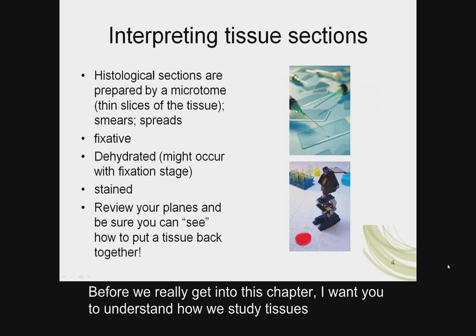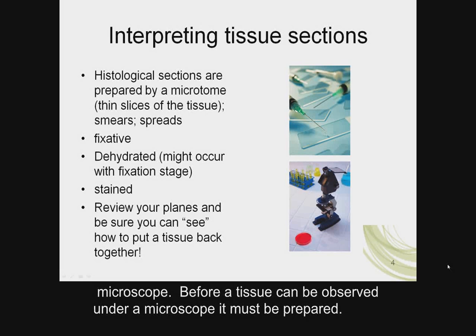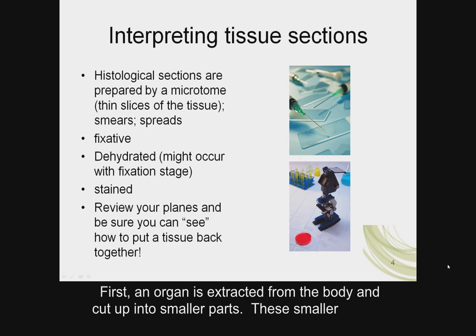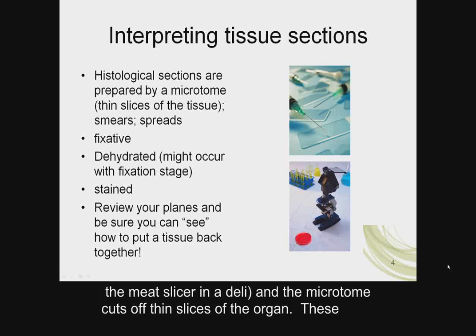Before we get into this chapter, I want you to understand how we study tissues in this class — we study them histologically, meaning we look at tissues under a microscope. Before a tissue can be observed under a microscope, it must be prepared. First, an organ is extracted from the body and cut into smaller parts. These smaller parts are then frozen, and the frozen solid mass is used in a microtome — think of the meat slicer in a deli — which cuts off thin slices of the organ.